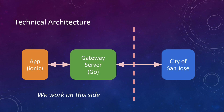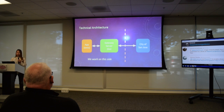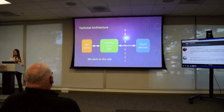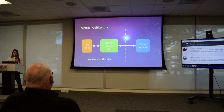The app is supported by a backend server. When an issue is reported, it sends to our server, and our server will adapt it to the proper format to communicate with the city, and finally send the report to the city of San Jose. When it is handled or not, they get an update, and our server will receive feedback back to the app.